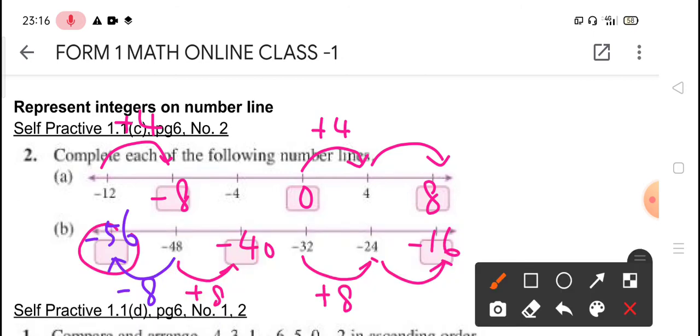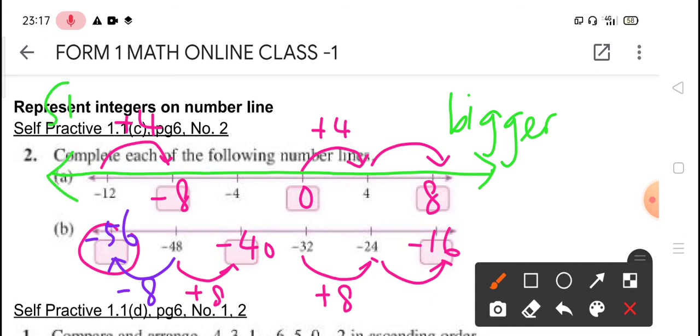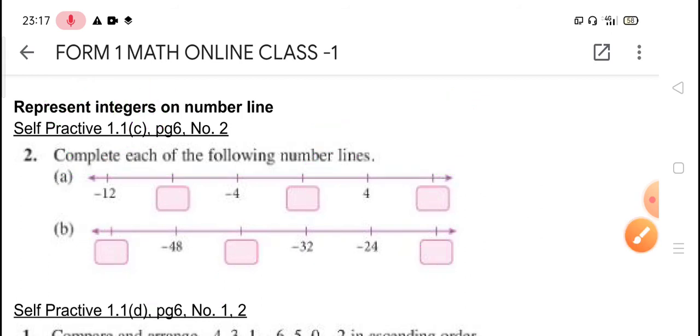You can get all these answers by using your calculator also. Just press it and then you check the answer with your calculator. And one thing you must remember that, for number line, when we go to the right hand side, the number will getting bigger and bigger. But when we move to the left hand side, the number will become smaller and smallest.